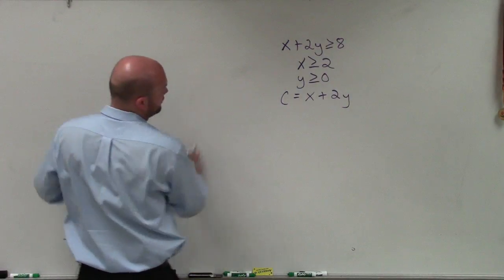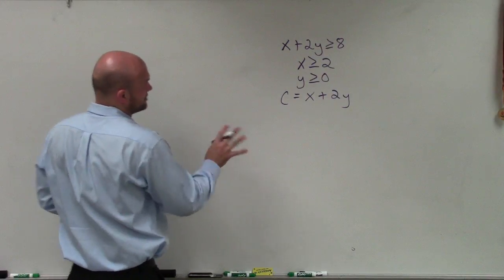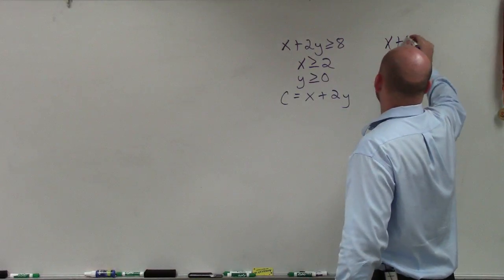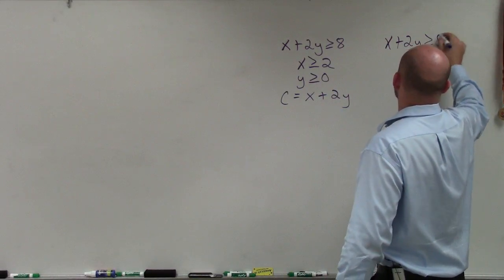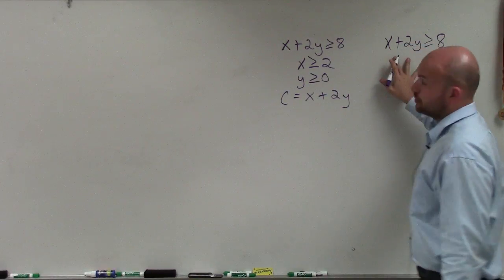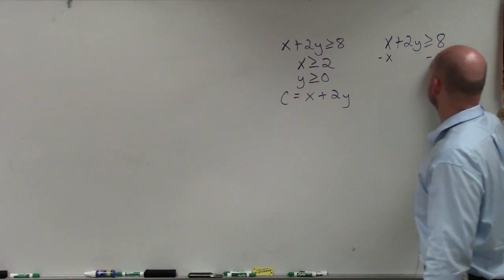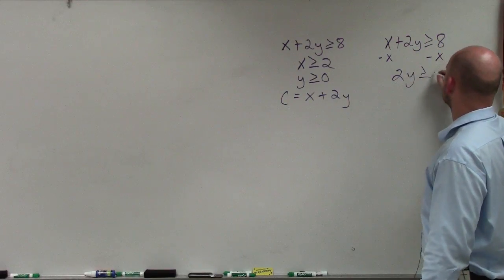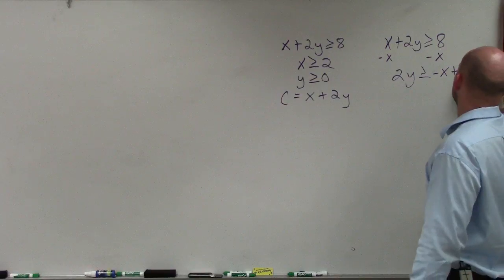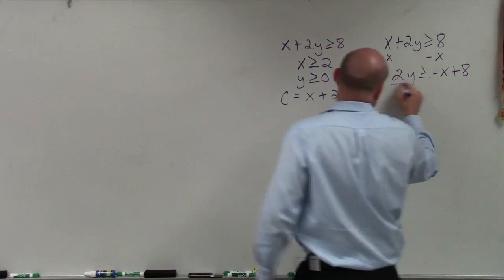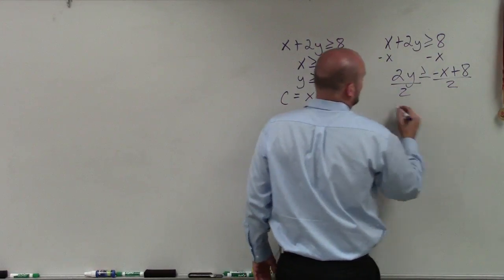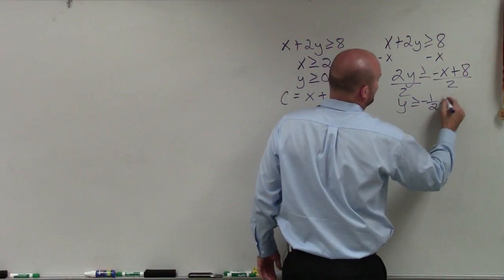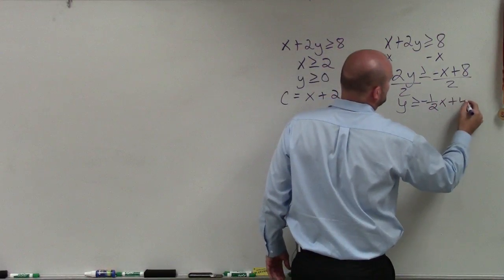I'm simply going to graph over here and write these equations. The first one I have is x plus 2y is greater than or equal to 8. To graph this, I will solve for y to put it into slope-intercept form, then divide by 2. I get y is greater than or equal to negative one-half x plus 4.